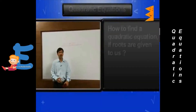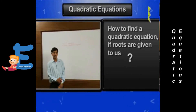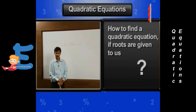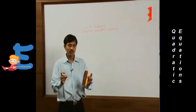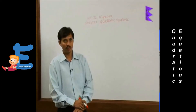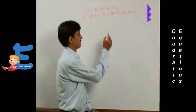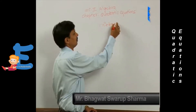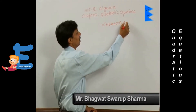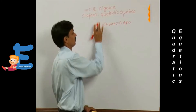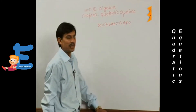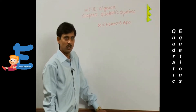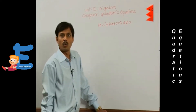I will tell you how to find a quadratic equation if roots of the quadratic equation are given. First of all, you know what is the general or standard form of a quadratic equation? ax² + bx + c = 0, where a is not equal to 0. This is the standard form of the quadratic equation.